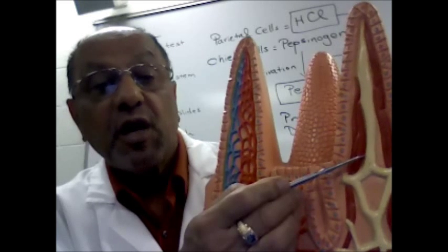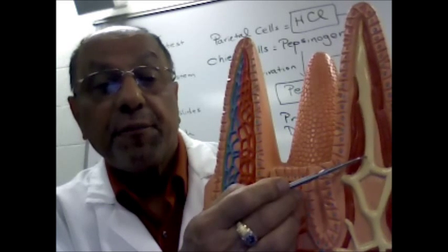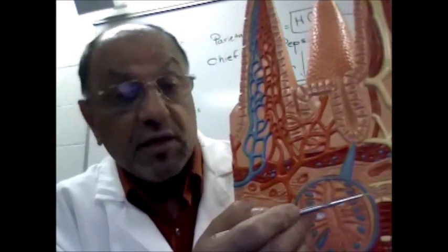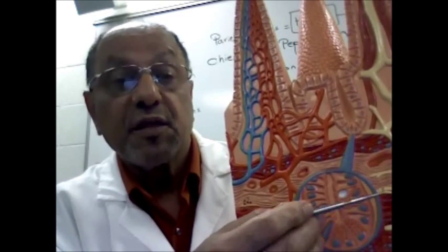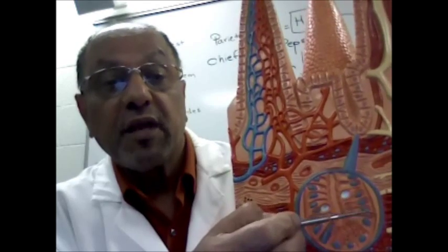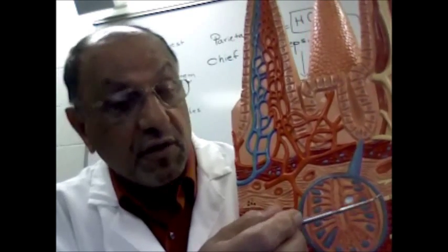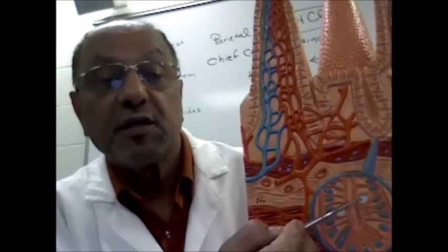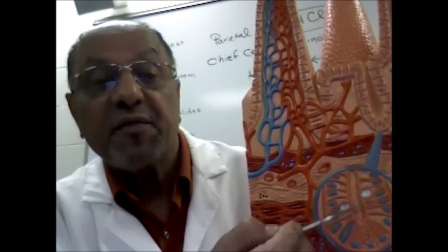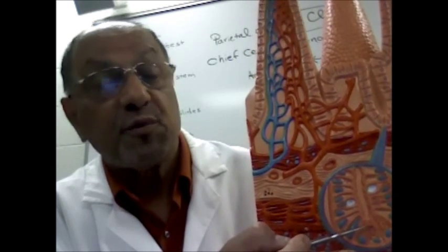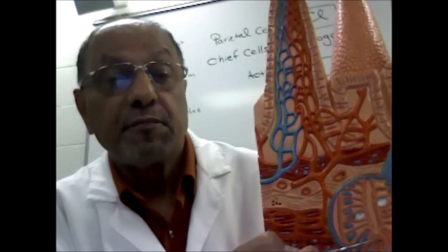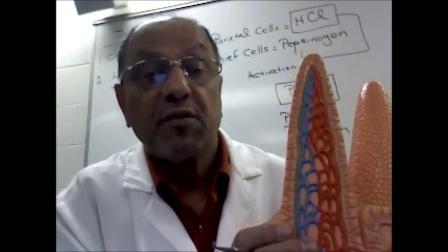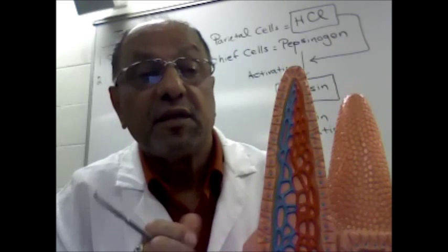The lacteals will absorb all the lipid materials, so lipid materials will go through the lymphatic system first before being returned to the blood. Also shown in this model in the enlargement are some specific cells: the goblet or mucus glands, and also the Paneth cells, which are cells that produce the enzyme lysozyme. That covers the anatomical features shown on this model of the intestinal villi.